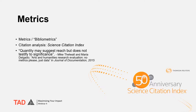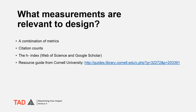Mike Thelwall and Maria Delgado's article in the Journal of Documentation from 2015 notes flaws in citation analysis, such as lack of a way to denote quality. They remind us that furthering the discipline is a primary goal of arts and humanities research, and that creativity and originality are important. They argue that quantity may suggest reach but does not testify to significance, and that unlike the sciences, high citation counts do not necessarily reflect peer opinions. No one metric reflects impact in the design disciplines; a combination provides a fuller picture. Citation counts can be important, but most often are not timely.